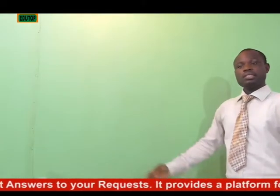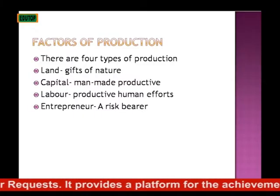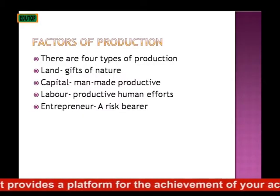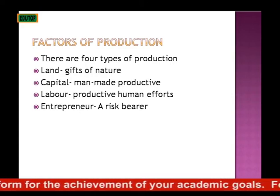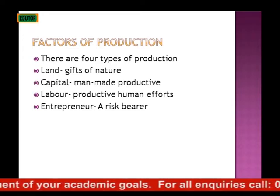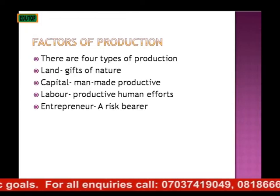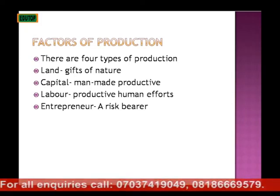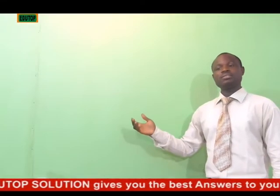Factors of production — there are four types. We have land, which is referred to as gifts of nature. We also have capital, which refers to man-made productive assets. We have labor, which refers to productive human efforts, and entrepreneur, which coordinates the business activities and is referred to as a risk bearer.